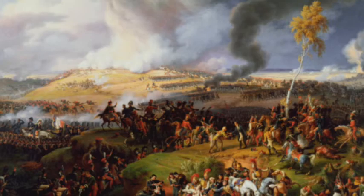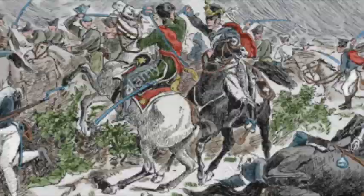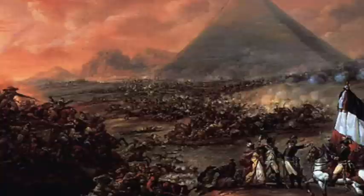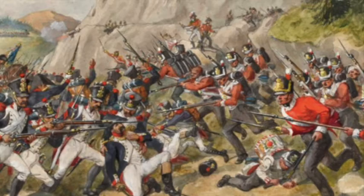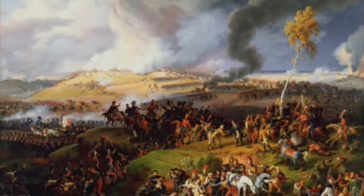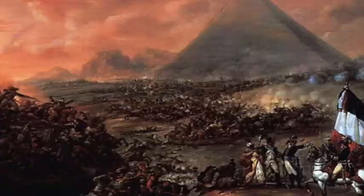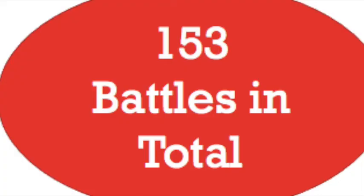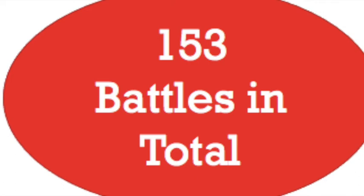The students will be shown pictures from the Battle of Borodino, the death of Prince Louis Ferdinand, the Battle of Leipzig and the Battle of Waterloo. They will be asked to note what is in the pictures — clearly massive violence and destruction, but also a diverse range of landscapes including the green fields of Europe and the pyramids of Egypt. The students will also be shown a map of where many of the battles of the Napoleonic Wars took place, along with statistics about the number of battles and the number of soldiers who died.